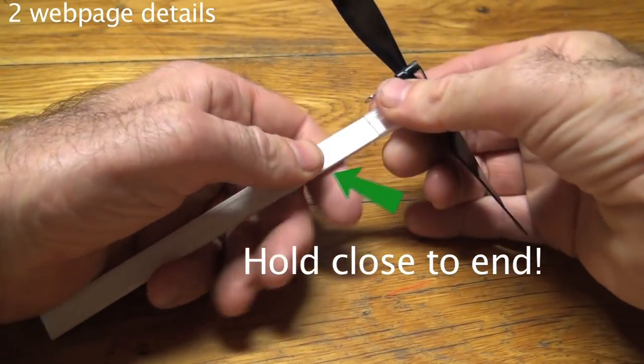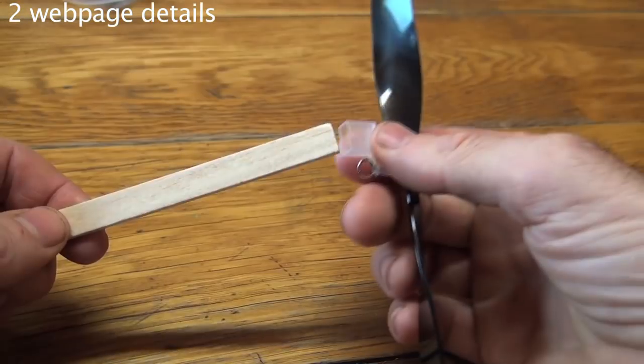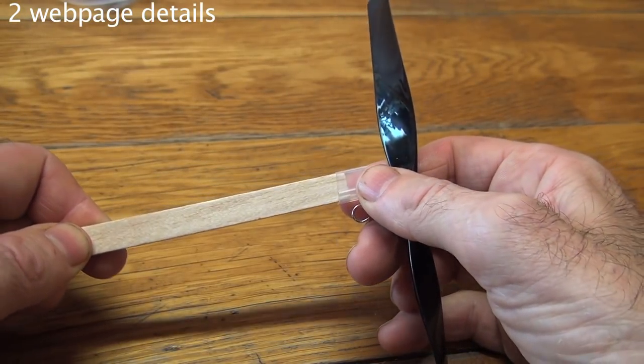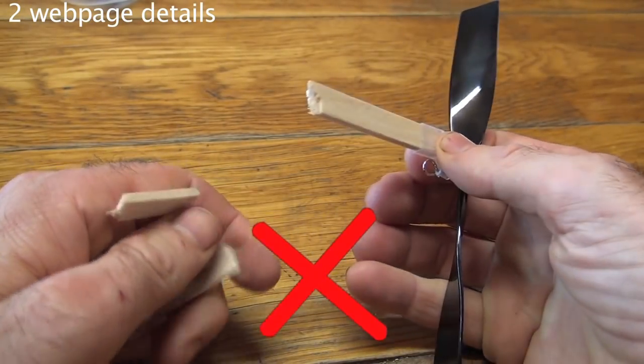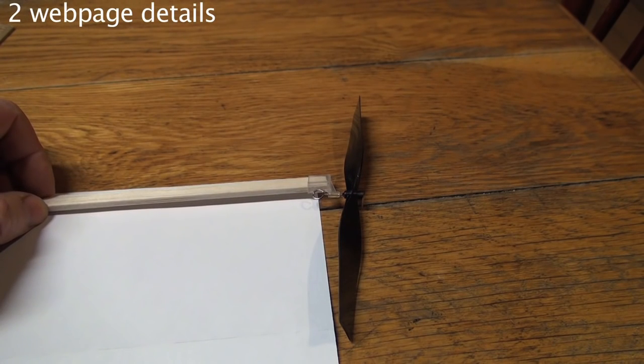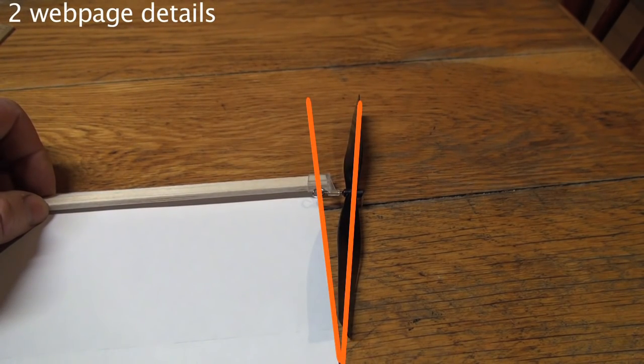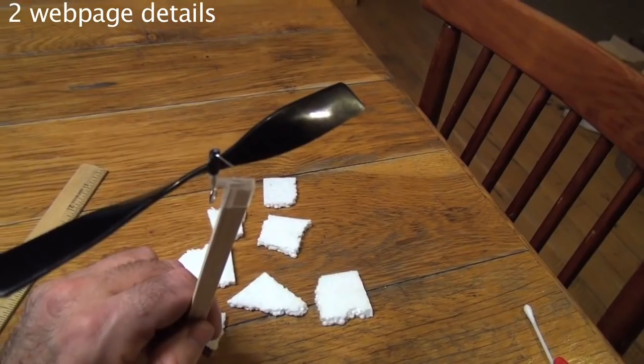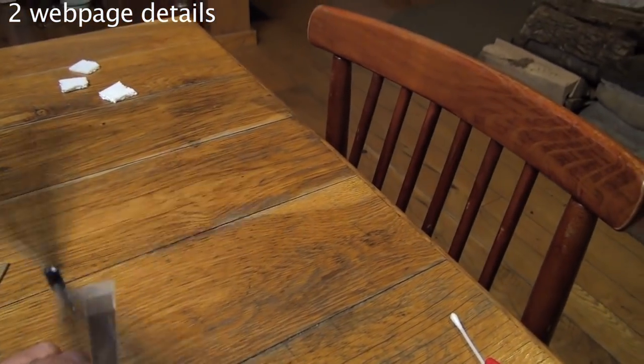Put a propeller on a balsa stick. Hold it close or this might happen. You might notice that the propeller is not quite perpendicular. That's okay, it's supposed to be like that. The propeller is so efficient that it'll act like a windmill when air hits it. But don't clock somebody.